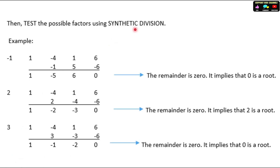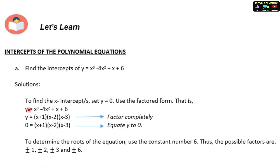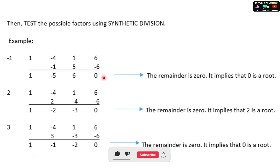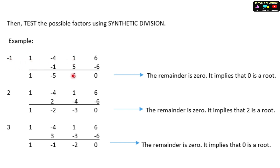We will be recalling synthetic division — it's trial and error. Try negative 1 first. Using synthetic division with coefficients 1, negative 4, 1, 6: bring down 1; 1 times negative 1 gives negative 1; negative 4 plus negative 1 gives negative 5; negative 5 times negative 1 gives 5; 1 plus 5 gives 6; 6 times negative 1 gives negative 6; remainder is 0. So negative 1 is a root.